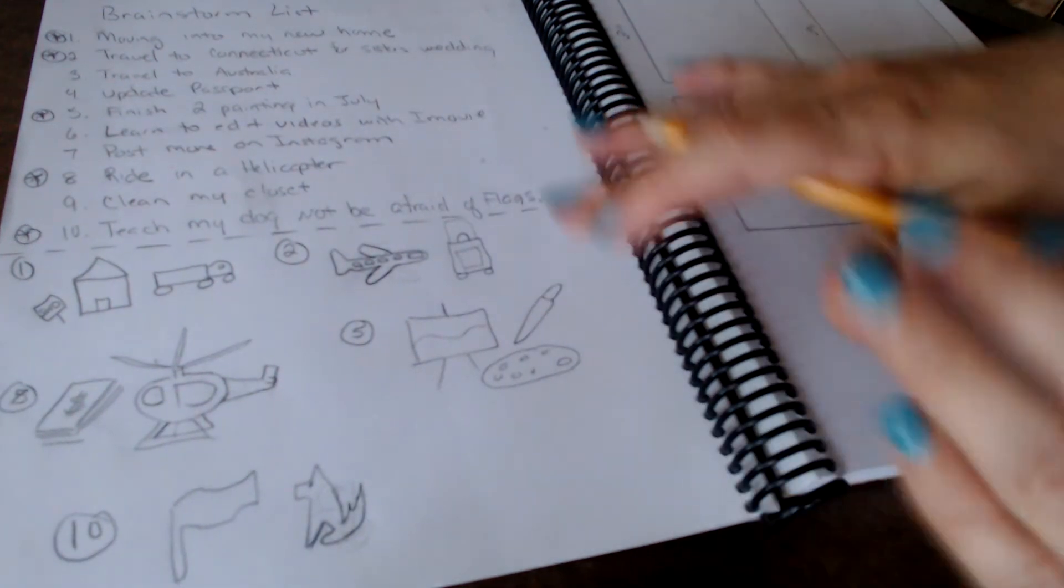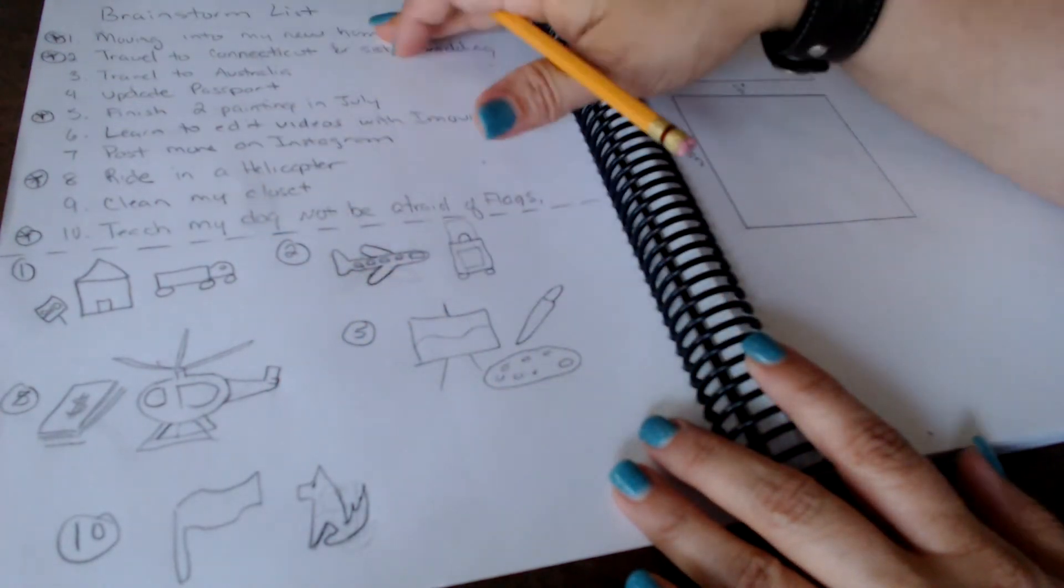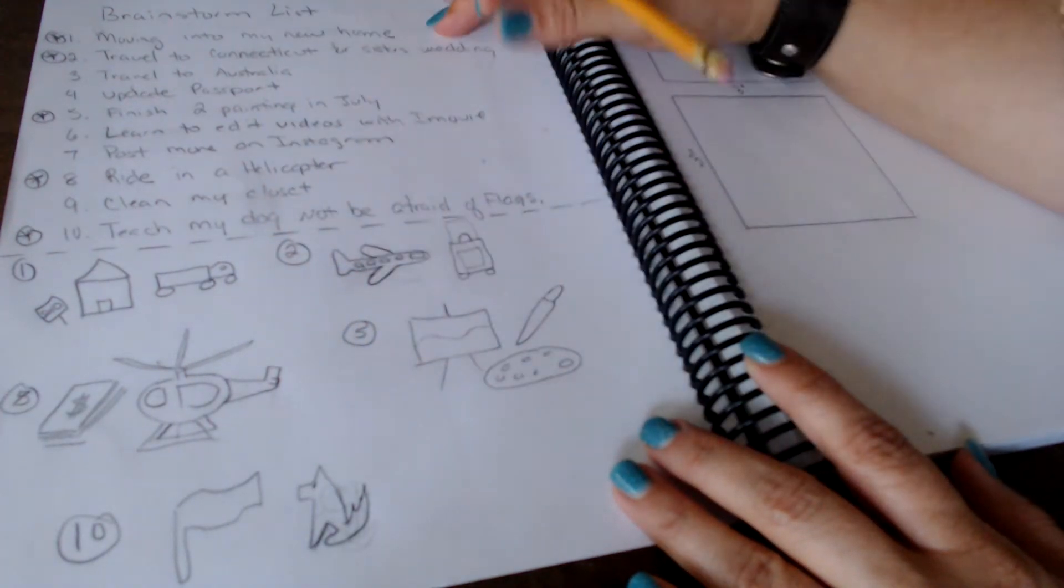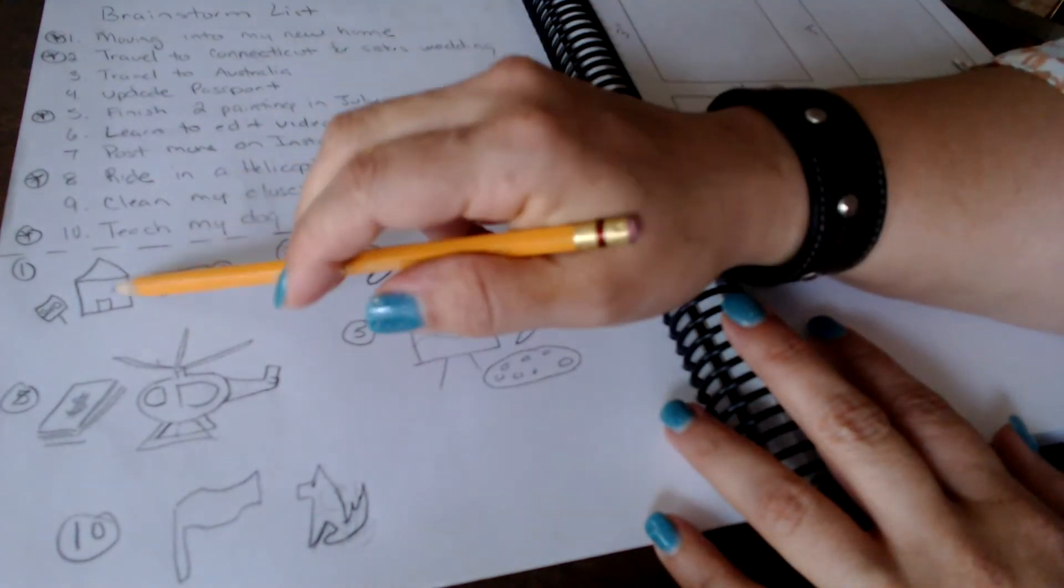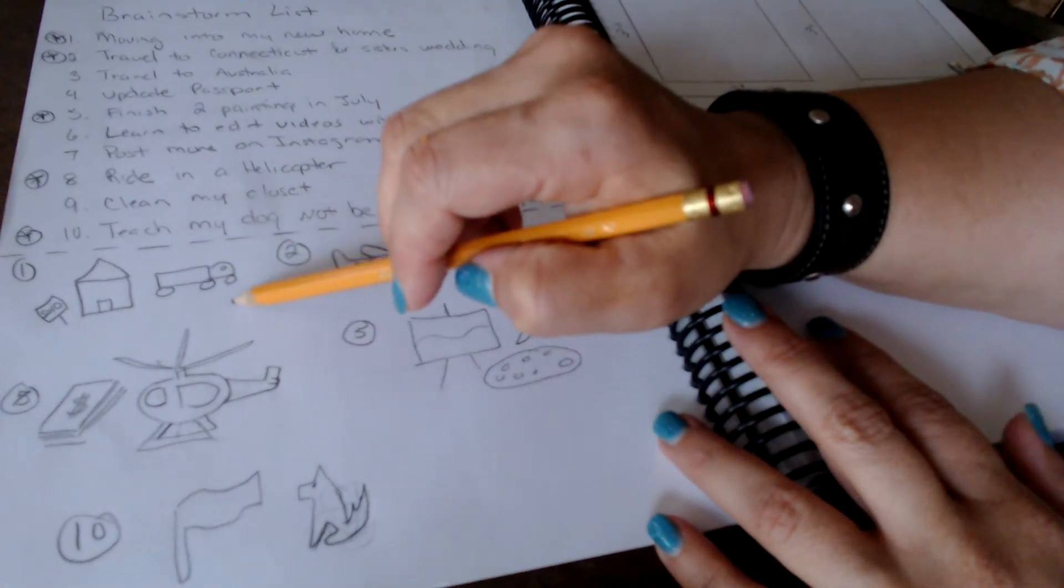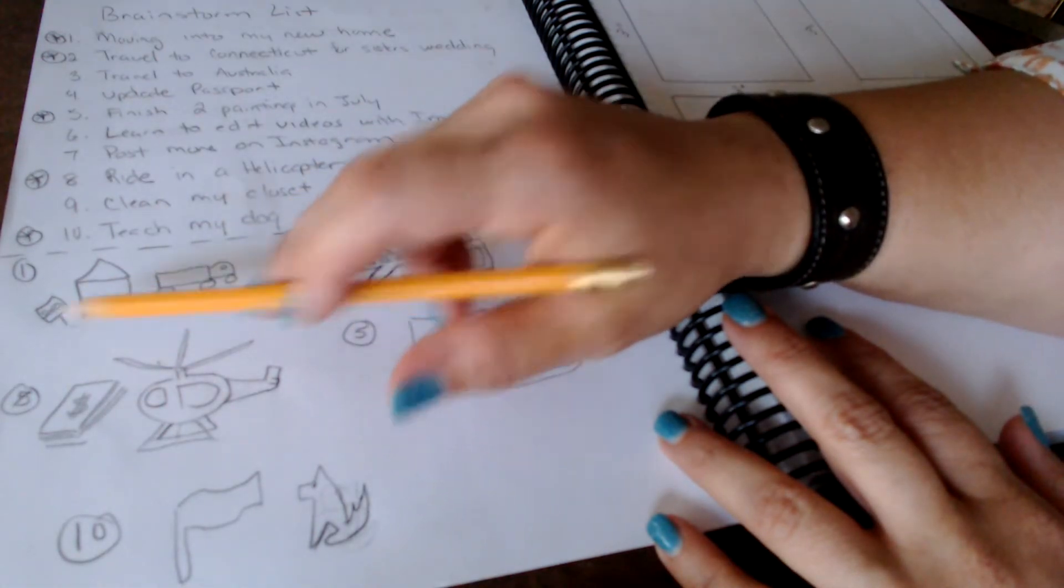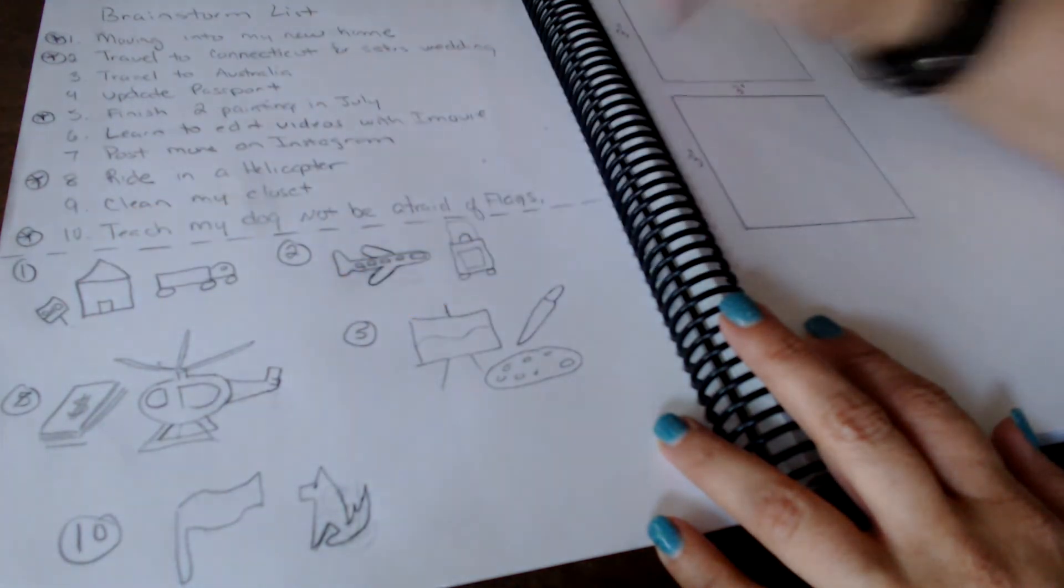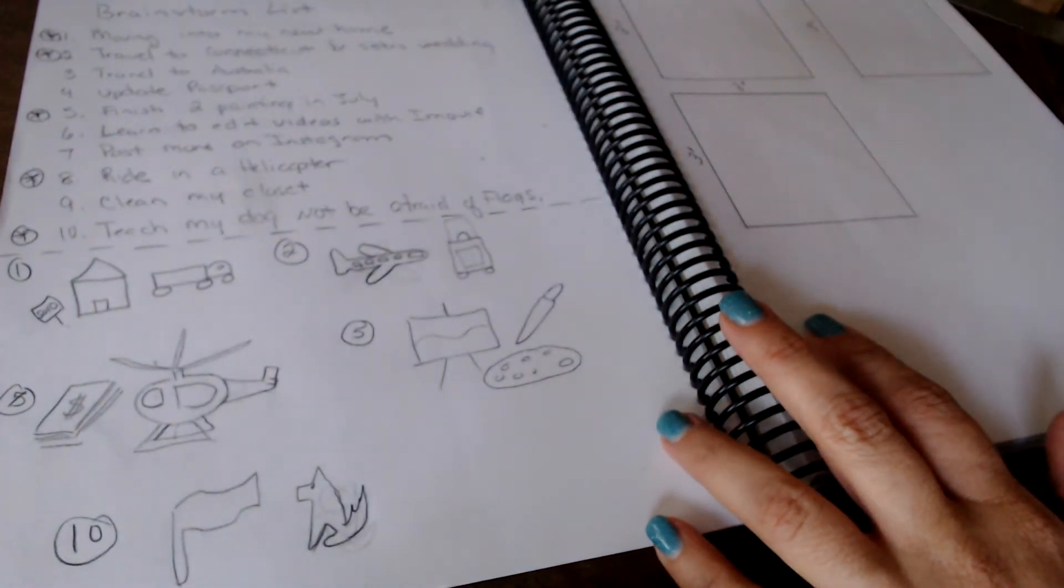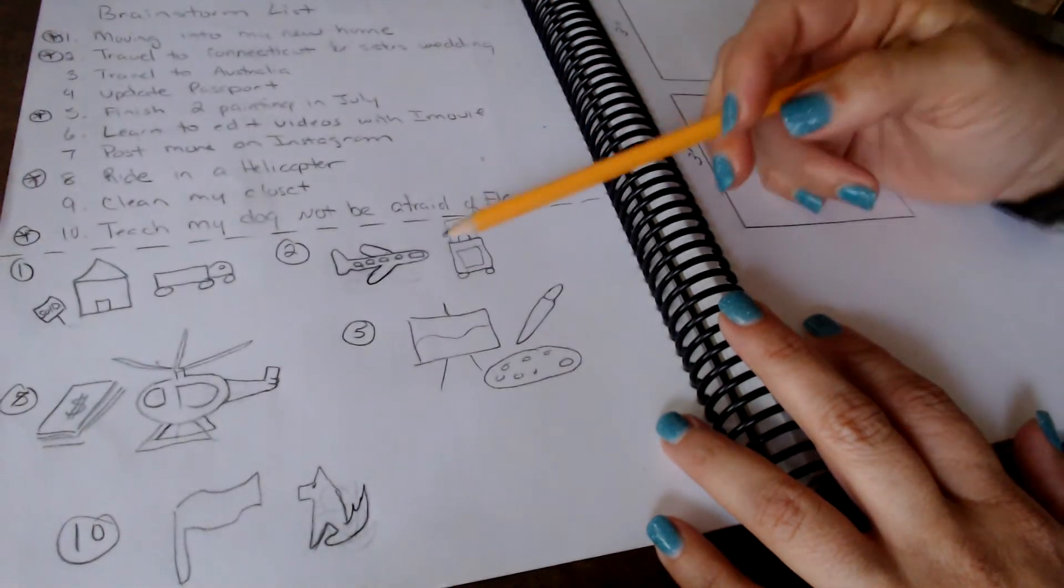Just to review that real quick, I chose these top fives. One of them was moving into my new home, very excited about that, so I drew a house with a little moving truck and the sign that says sold. That can actually be a third image, an extra image, but I drew that to symbolize that process of moving into a new home.